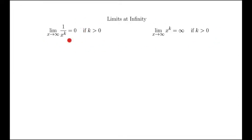Remember these two rules that we saw earlier. The limit as x tends to infinity of 1 over x to the k is equal to 0. The limit as x tends to infinity of x to the k equals infinity, as long as the exponent is greater than 0.